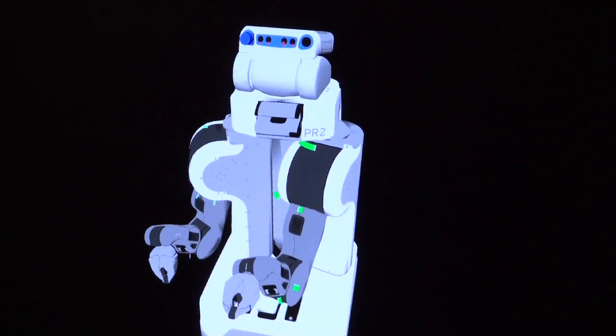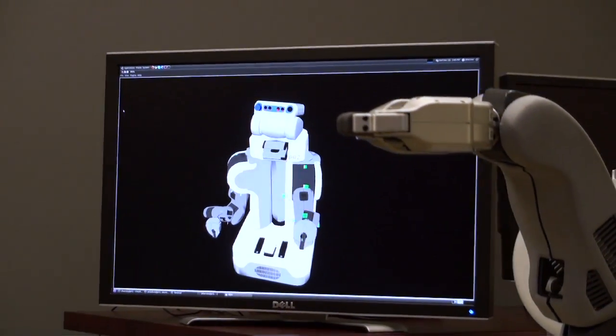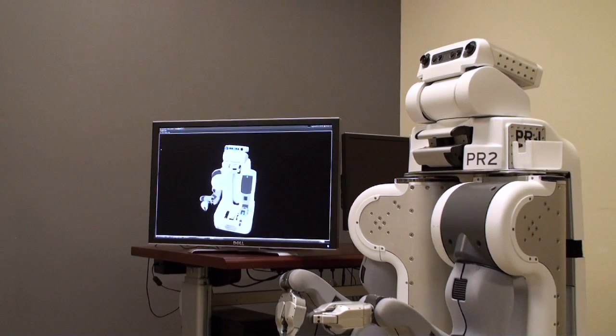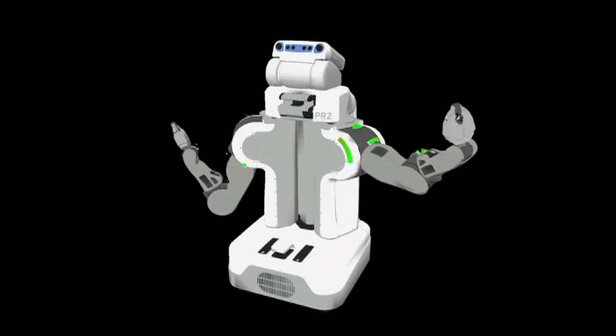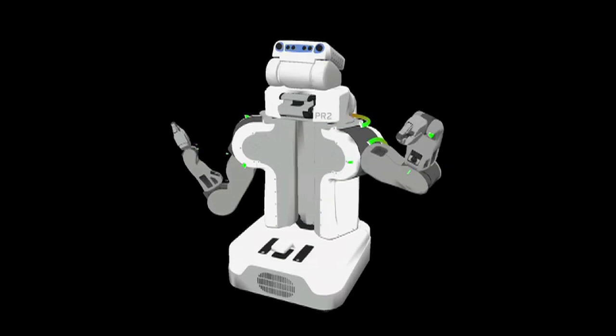A precise model of the robot dynamics can help us to design a more accurate, efficient and eventually even safer control method. Traditional inverse dynamics models are based on classical mechanics. Compliant manipulators like the PR2 arms have non-linear dynamics caused by belt drives, gearboxes and friction.